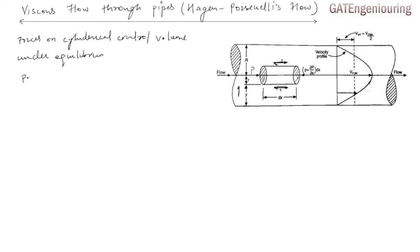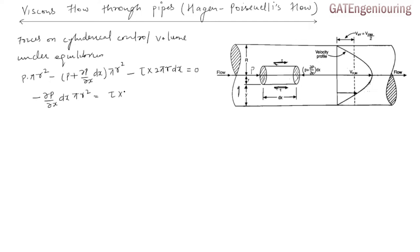The pressure force is p·πr² on the inlet face, minus (p + ∂p/∂x · dx)·πr² on the outlet face, which acts against the motion — that is why there is a minus sign. Also, shear stress times the surface area of the cylindrical volume (circumference times length dx) equals zero. Simplifying, the terms cancel and we get: −∂p/∂x · dx · πr² = τ · 2πr · dx, which gives τ = r/2 · (−dp/dx). This is equation 1: the relationship between shear stress and pressure distribution.